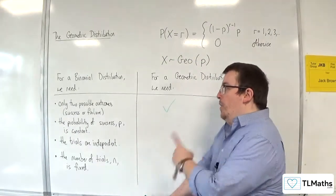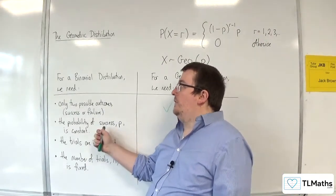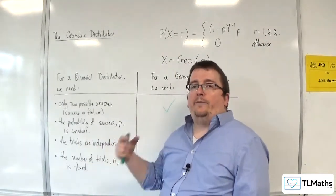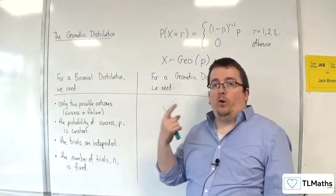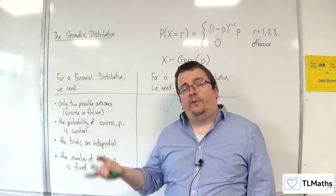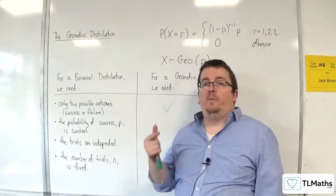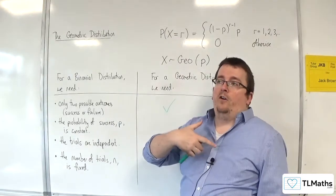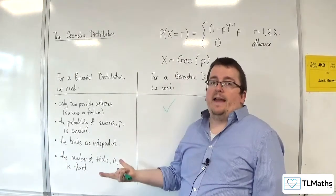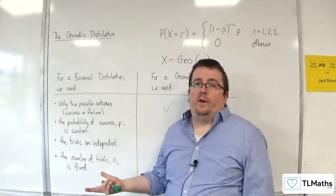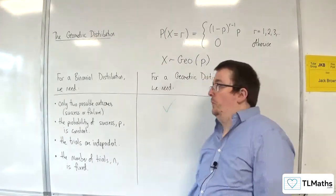The probability of success P is constant for a binomial distribution, and for geometric distribution, that also needs to be the case. In the previous example, we saw the probability of success of me playing a game was 0.2, and it always remained at 0.2 for all the trials.